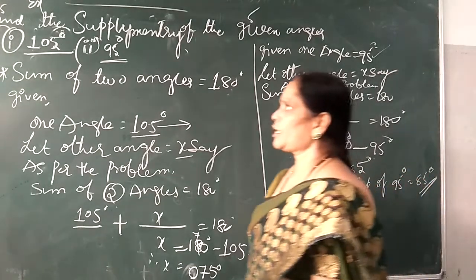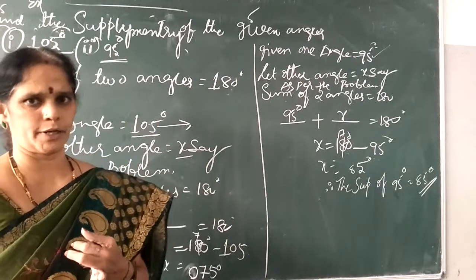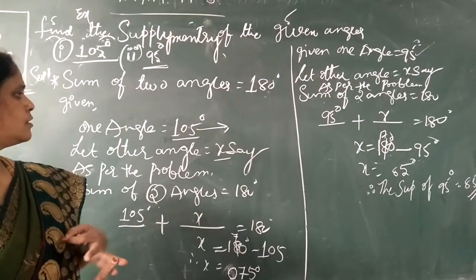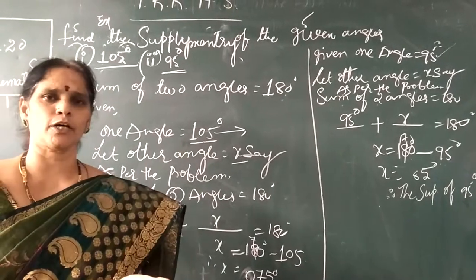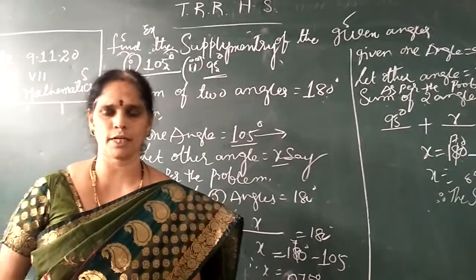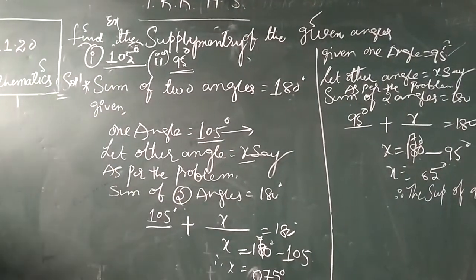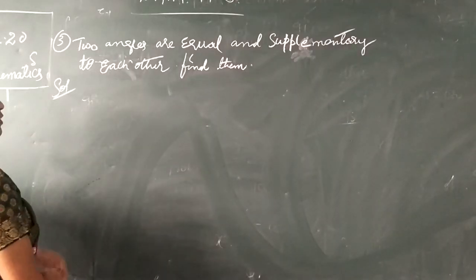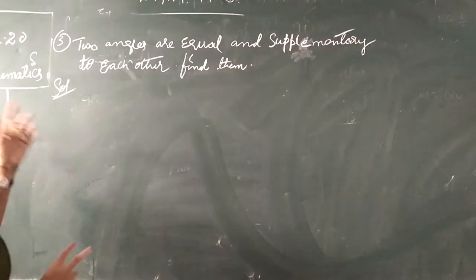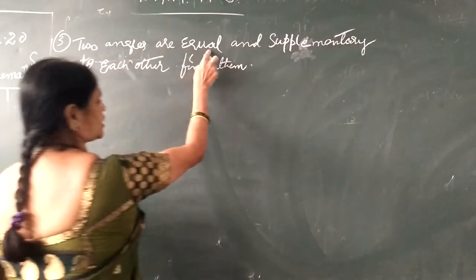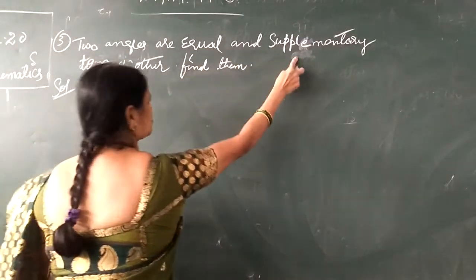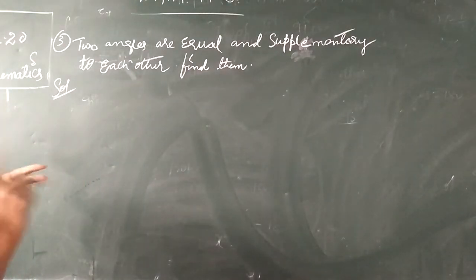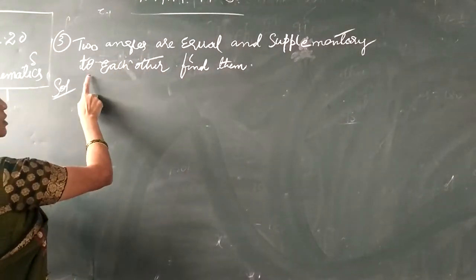So today I covered complementary angles and supplementary angles. This is enough for today. For the remaining problems, by seeing your textbook, finish up the problems. See here one more problem — a complementary and supplementary variation. Two angles are equal and supplementary. We have to take two angles that are equal to each other and also supplementary to each other.